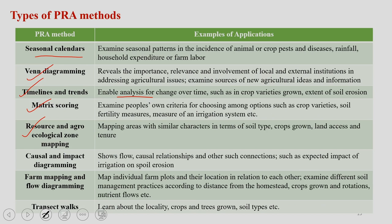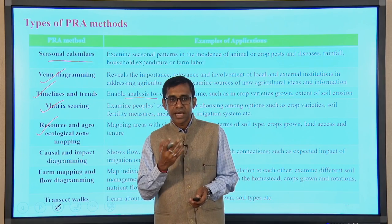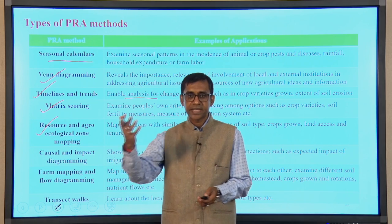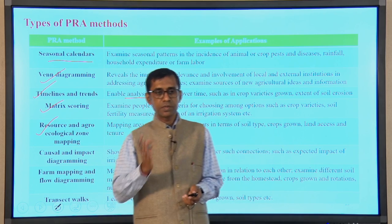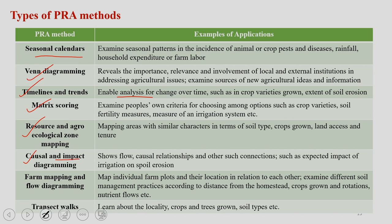Resource and agroecological zone mapping involves mapping areas with similar characteristics in terms of soil type, crops grown, land access, and tenure. This helps understand the distribution of different natural resource characteristics in a particular area. Causal and impact diagramming is also very important — it shows causal relationships and connections such as the impact of irrigation on soil erosion or impact of chemical pesticides on insects. These diagrams help identify the causes of problems and their nature, allowing you to find the right path to address them.